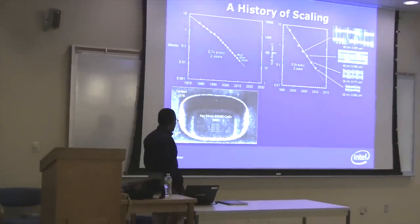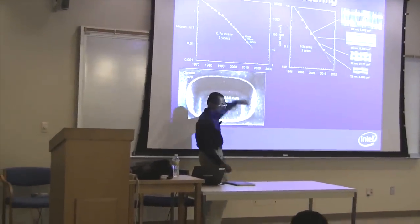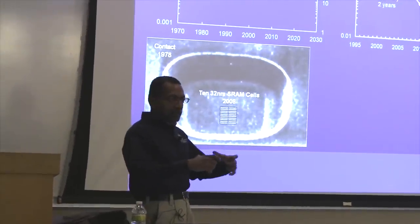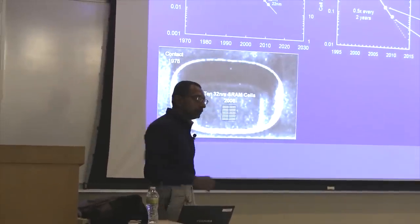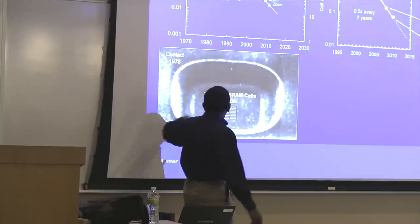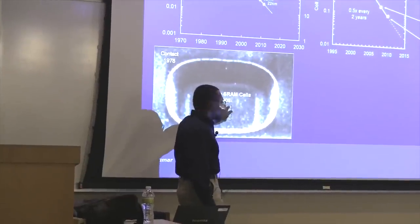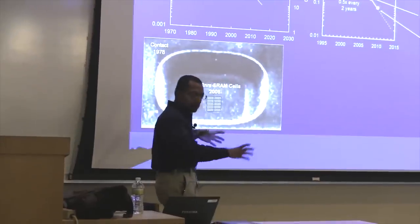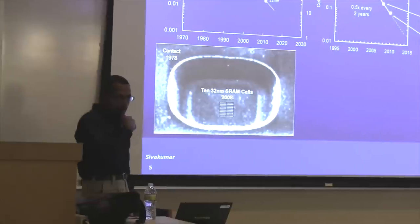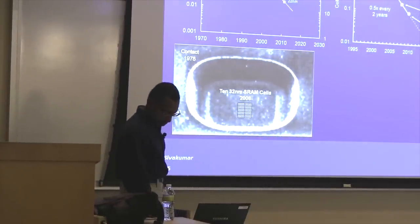This is an interesting picture: in 1978, a contact — which is a connection between two metal layers, a vertical sort of connection — that was what a contact looked like back then. You can pack 10 32-nanometer memory cells inside one single contact from 1978. So it just graphically illustrates how much smaller features are now compared to where they were just a short time ago.